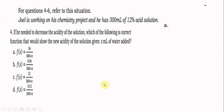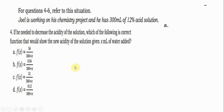For questions 4 to 6, we are referring to this problem: Joel is working on his chemistry project and he has 300 ml of 12% acid solution. If he needed to decrease the acidity of the solution, the correct function that shows the new acidity given x ml of water added is letter A: 36 over 300 plus x.